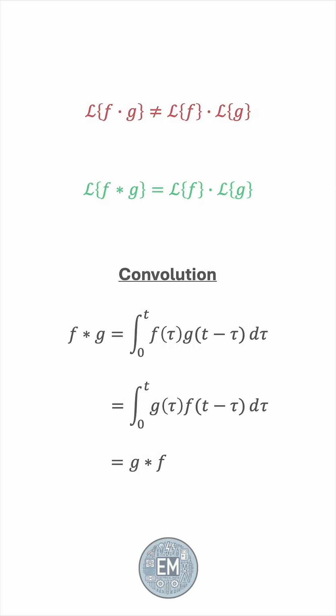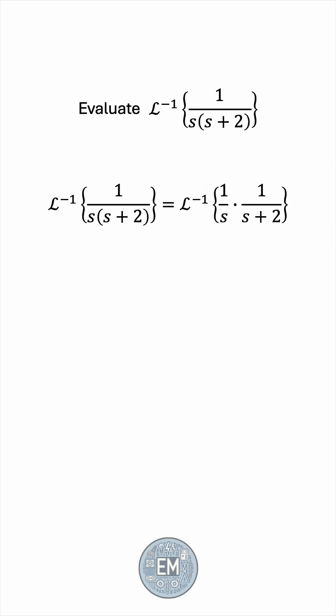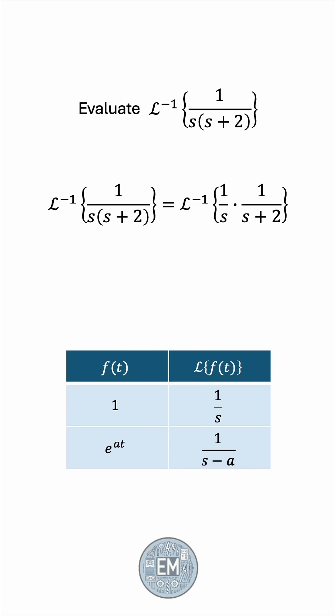Let's take a look at a worked example. Say we wanted to evaluate the inverse Laplace transform of 1 over s times s plus 2. Typically you would decompose this using partial fractions, but for demonstration let's use convolution. We'll rewrite the inside as 1 over s times 1 over s plus 2, and both of these transforms are known from a standard table — the inside becomes the Laplace transform of 1 times the Laplace transform of e to the negative 2t.